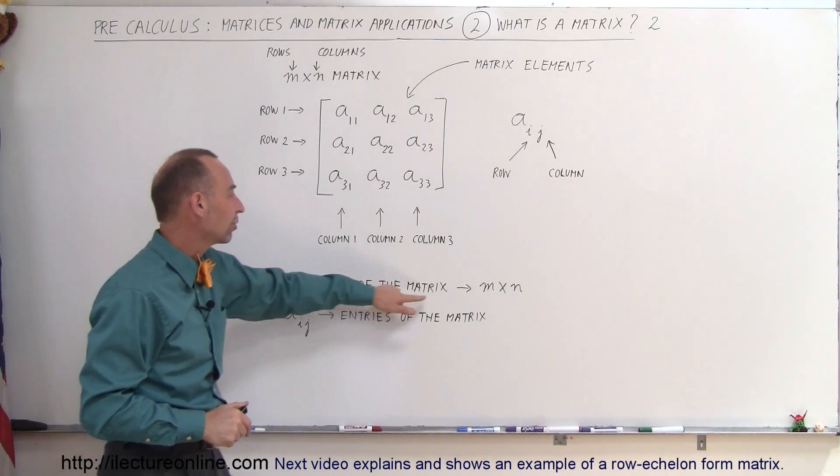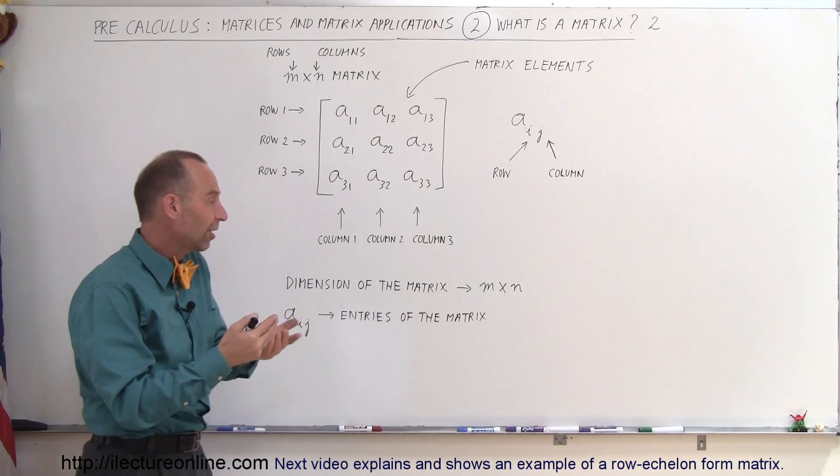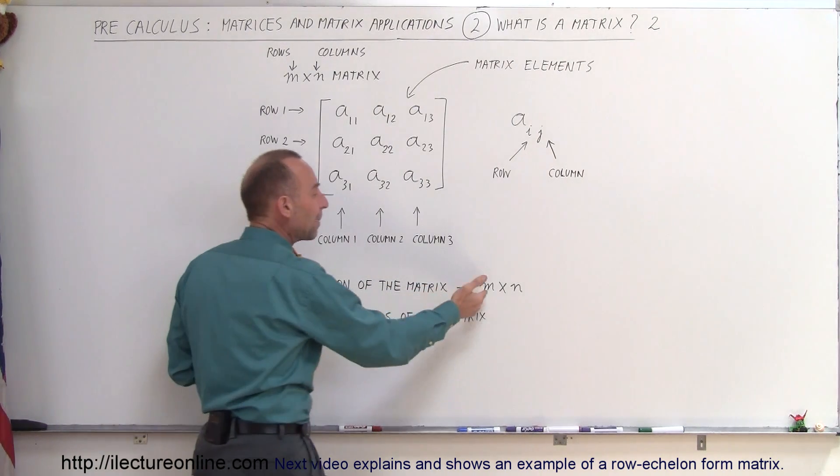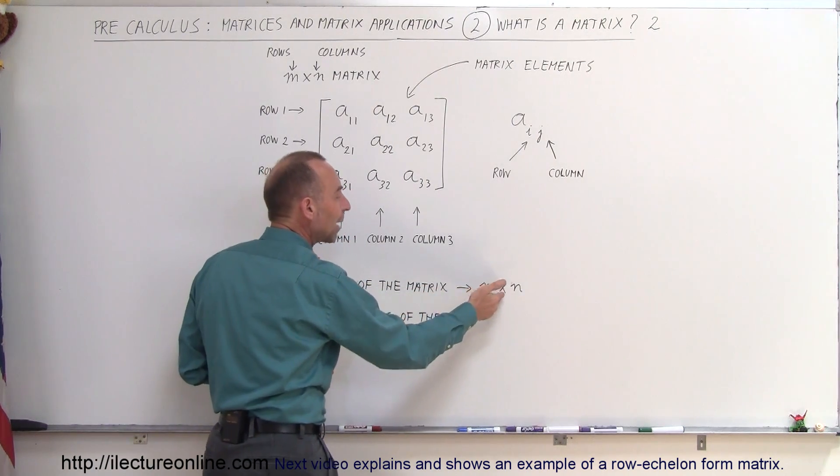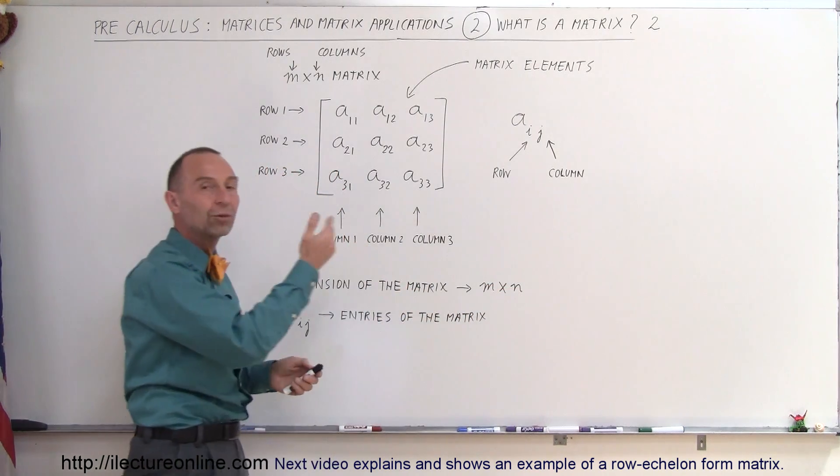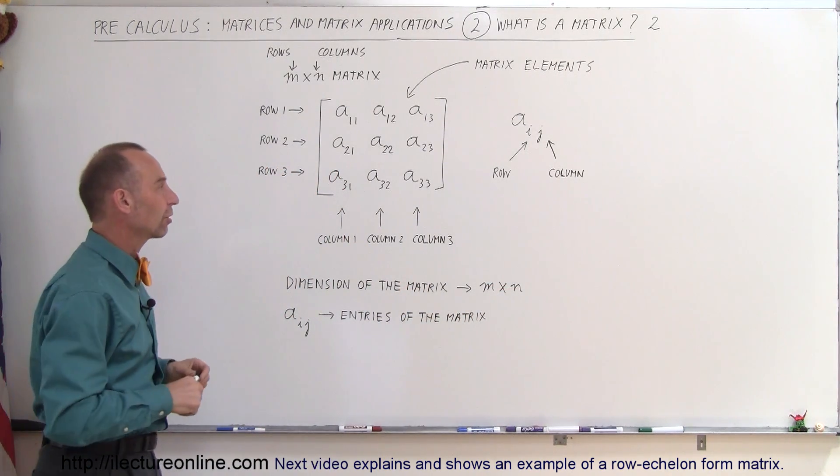Also notice that the dimension of a matrix is mentioned in terms of m times n - how many rows times how many columns. In this case, this would be a 3 by 3 matrix; that's called the dimension of the matrix.